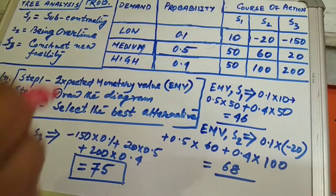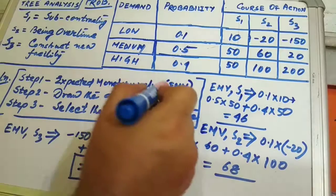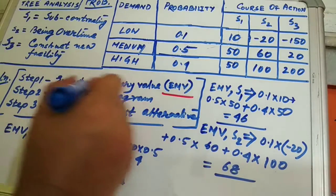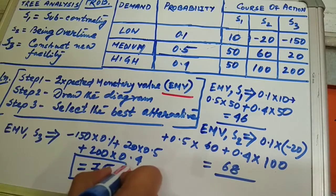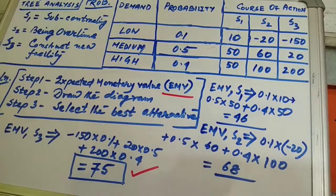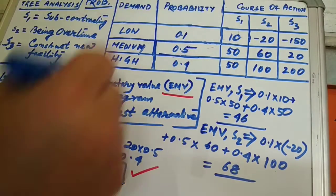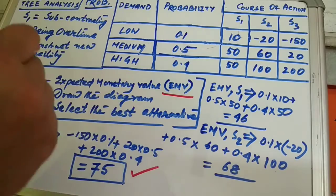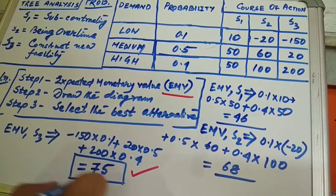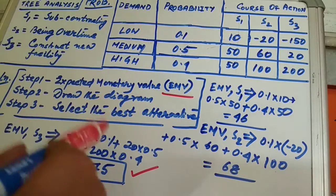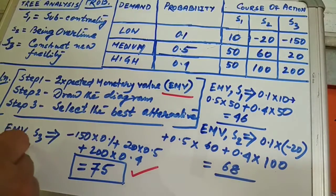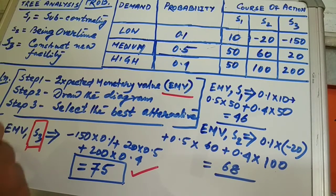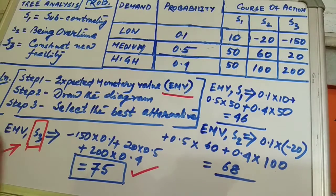This is the expected monetary value — not EOL. For EMV we select the maximum value, which is best for this particular glass factory. From EMV we can conclude that 75 is the best, and the corresponding alternative is S3. So S3 is the best alternative to be selected for this glass factory.